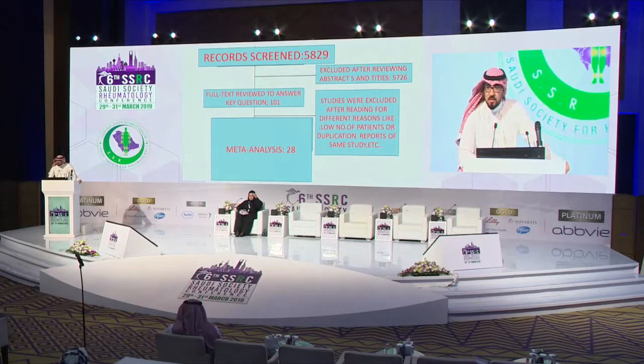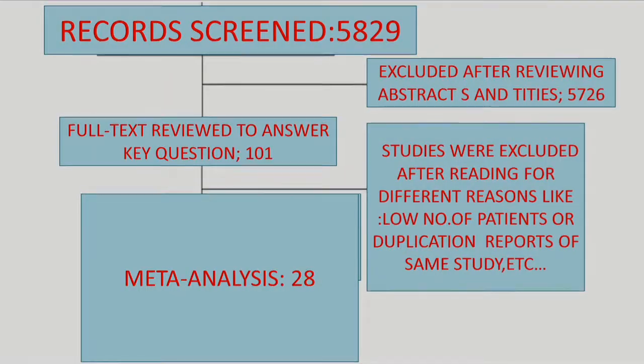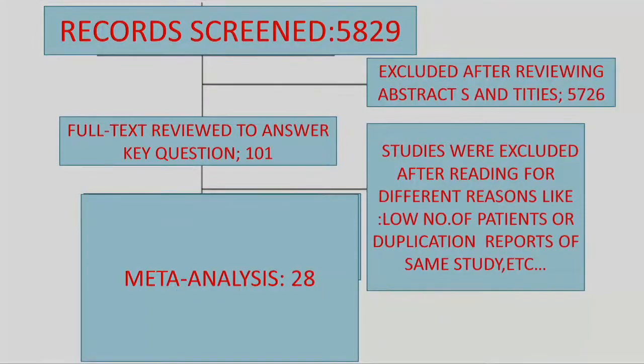Starting with a meta-analysis in which two researchers independently reviewed titles and abstracts of 5,829 papers, ending with 101 papers with potential for analysis, and after review just 28 were fit for final meta-analysis. As a result, they divided variables into predicting factors, factors associated with reduced risk of malignancy, and factors showing inconsistent results.